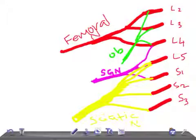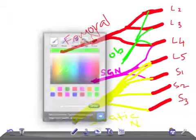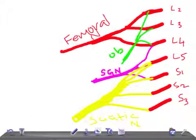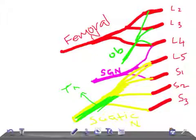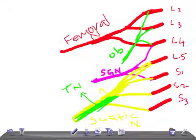Now, very importantly, the sciatic nerve is made up of two components. The green part — that is the tibial nerve. The yellow part — that is nothing but the common peroneal nerve, also called the fibular nerve. Together, the tibial nerve and the common peroneal nerve form the sciatic nerve.